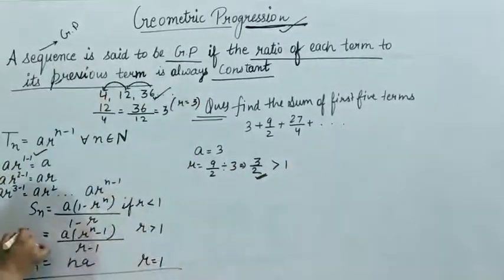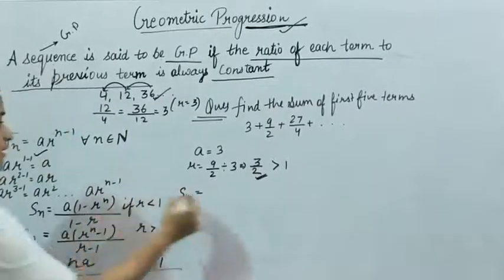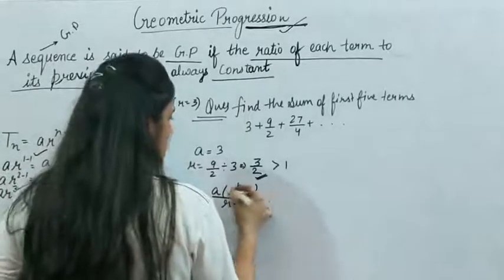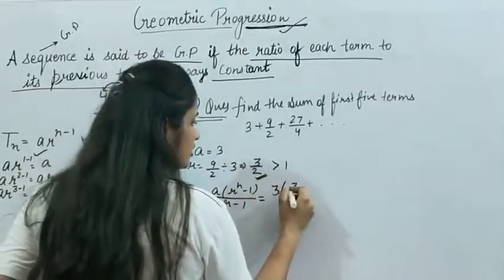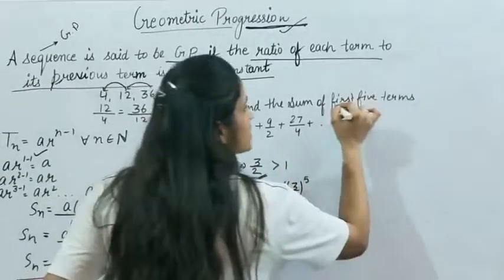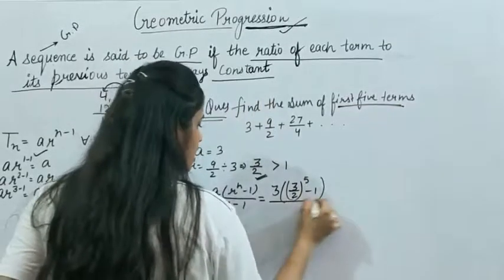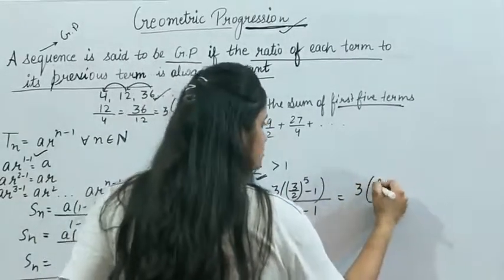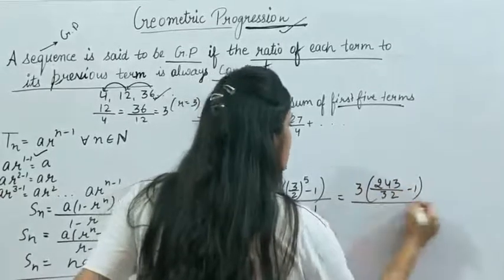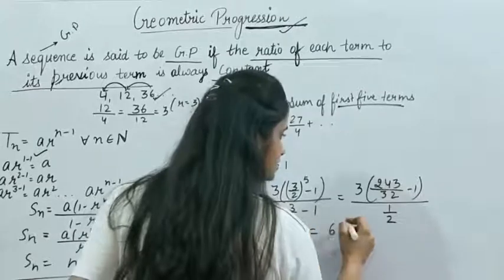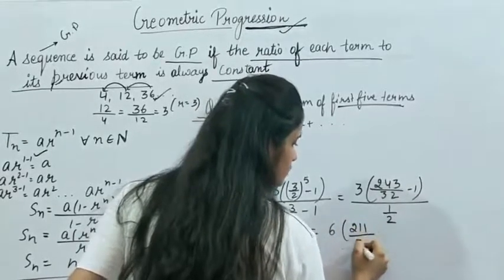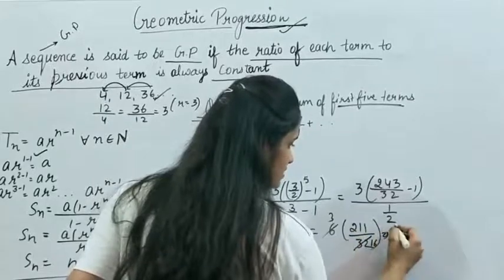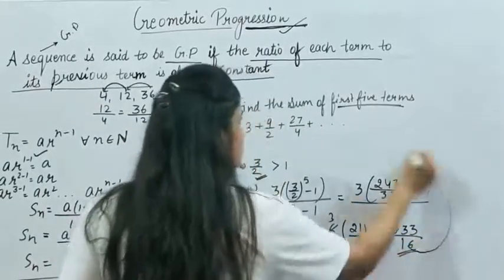Since r is greater than 1, use S_n = a(r^n - 1) / (r - 1). So S_5 = 3 · [(3/2)^5 - 1] / (3/2 - 1). This gives 3 · [243/32 - 1] / (1/2), which equals 3 · (211/32) · 2 = 633/16.